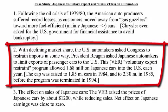President Ronald Reagan asked the Japanese automakers to limit exports of passenger cars to the United States. This voluntary export restraint program allowed 1.7 million Japanese cars into the U.S. each year. The cap was raised thereafter before the program was terminated by 1994.